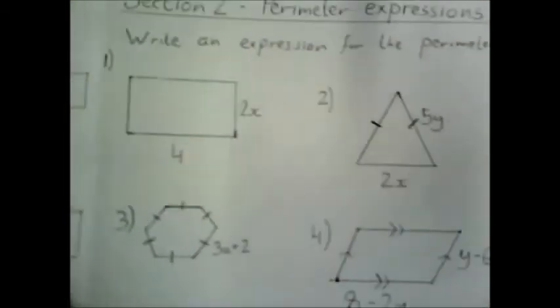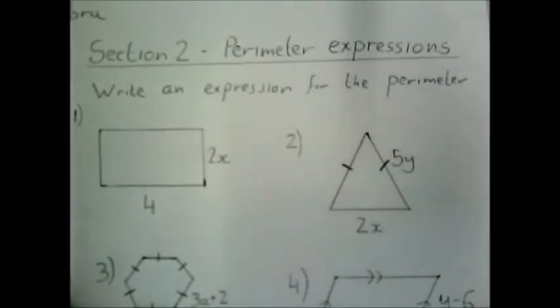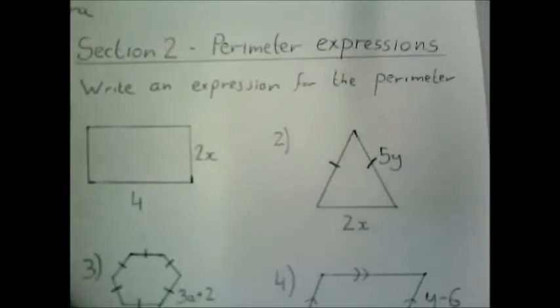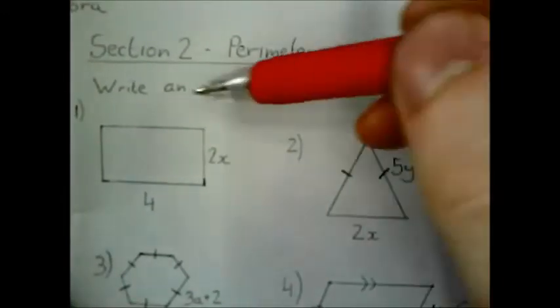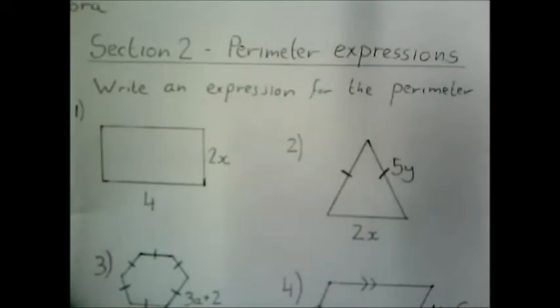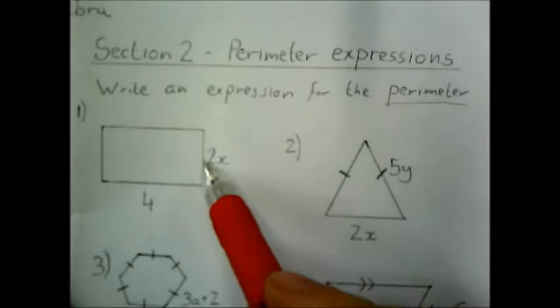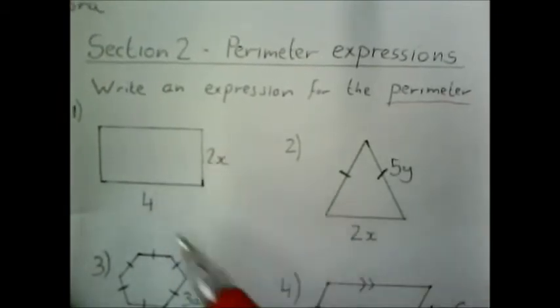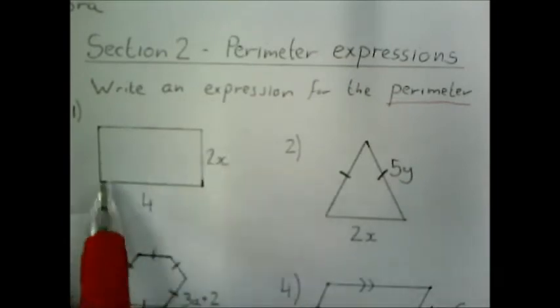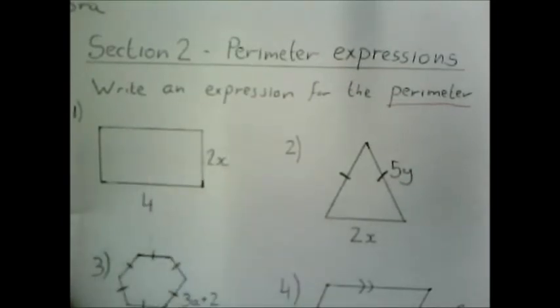OK. For section 2, I'm writing an expression for the perimeter. So really, an expression is just what sums would I do if I wanted to work out that value, the perimeter, where I've been given some variables instead of only numbers.